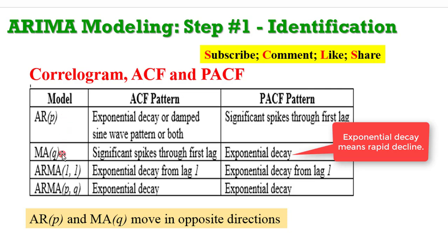For an MA process, you will observe that the ACF pattern indicates significant spikes from the first lag, while the PACF pattern indicates exponential decay. For an ARMA process, both ACF and PACF will have the same pattern — that is the easy way to identify ARMA models. From the table you can observe that AR and MA move in opposite directions.